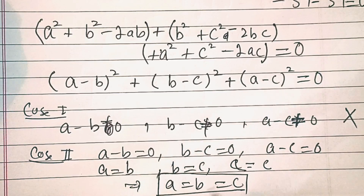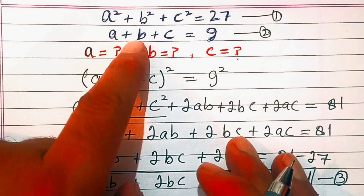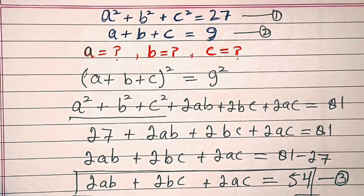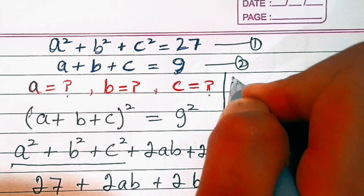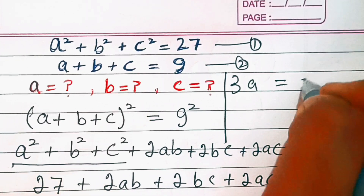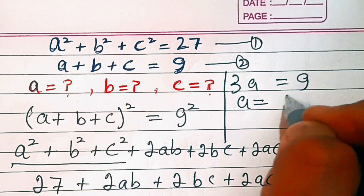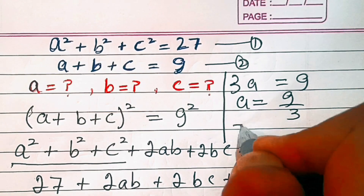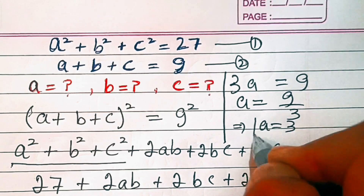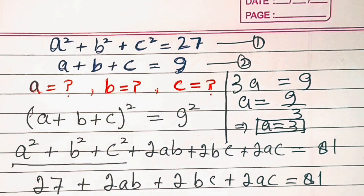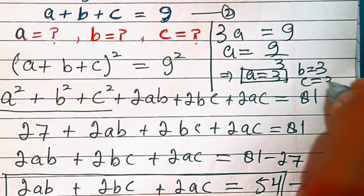So let's substitute this in equation two, where a + b + c = 9. We'll have 3a = 9, which means a = 9/3 = 3. Similarly, b = 3 and c = 3.